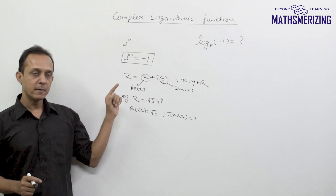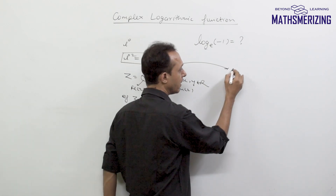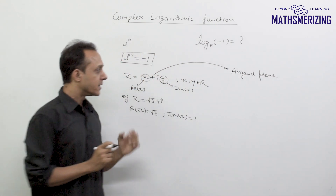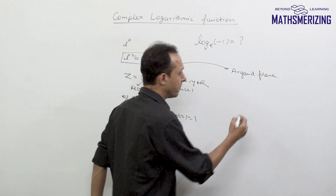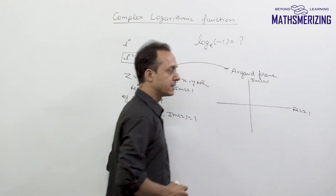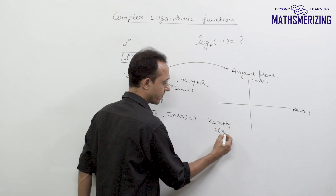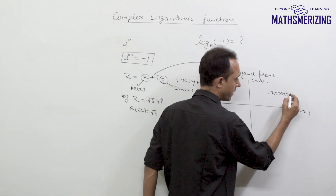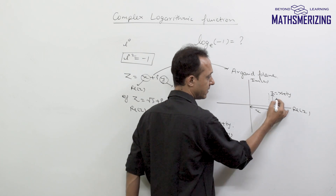We can also express any complex number in polar form, but first we need to understand how to represent a complex number on the Argand plane. Just like we represent points on a Cartesian plane, we represent complex numbers on the Argand plane, which has a real axis and an imaginary axis. Any point z = x plus iota y is expressed as the coordinate (x, y).